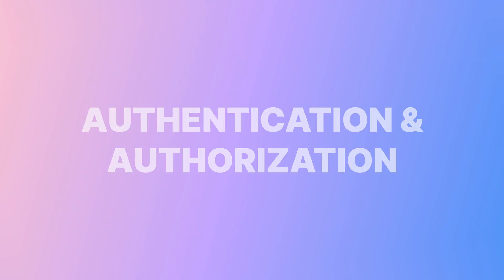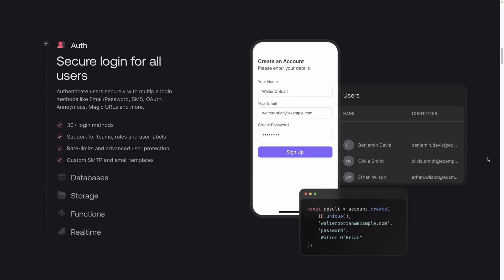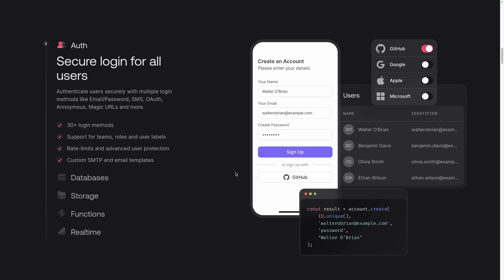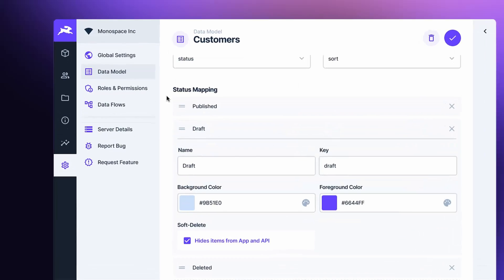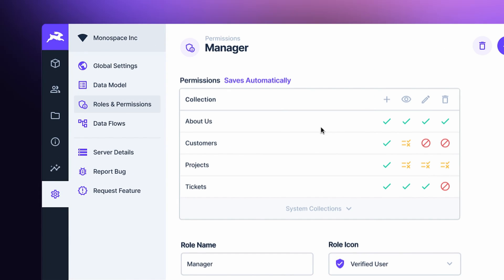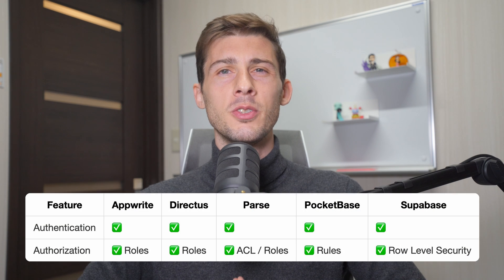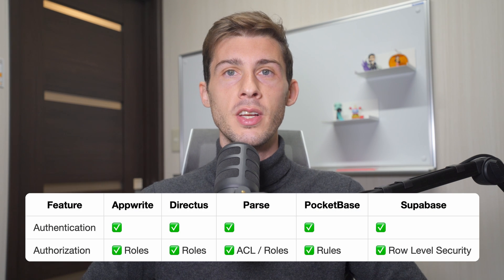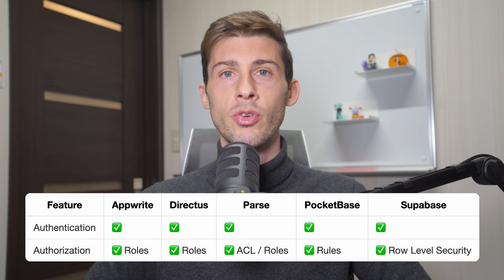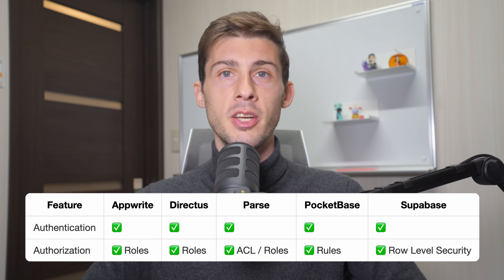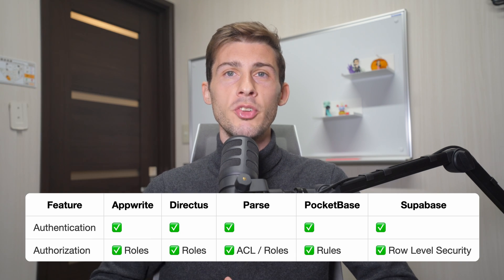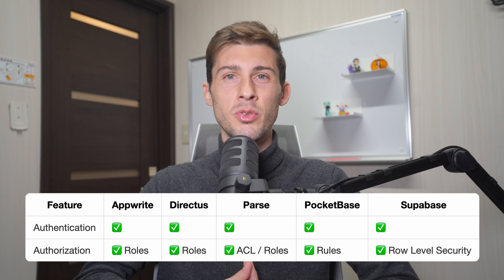Authentication and Authorization. Authentication is the process of creating and verifying the identity of a user — in simple words, the login, signup, and forgot password functionality. Authorization, on the other hand, is the process of verifying if a user has access to a specific resource or not. They all support authentication, including classic email/password and social login like Google, Facebook, GitHub, etc.